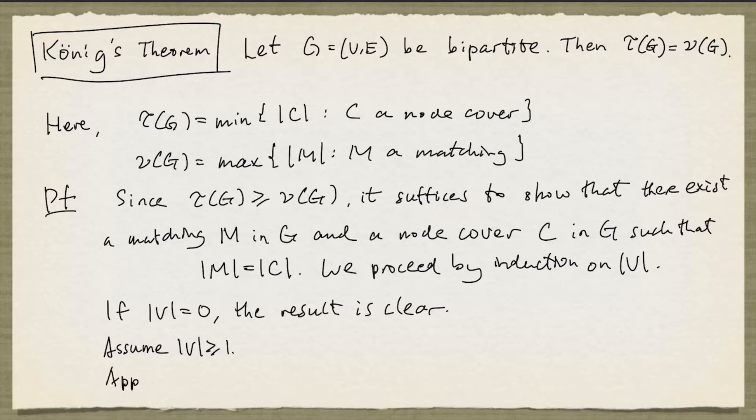So we apply the perfect matching algorithm to G along with the empty matching. And we'll let x, y be a bipartition of G. So there are two cases depending on what the algorithm returns.